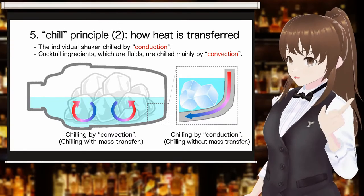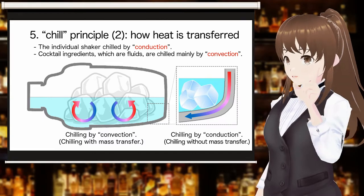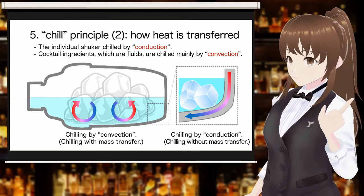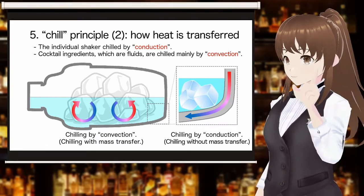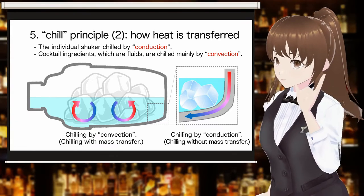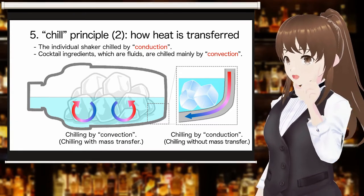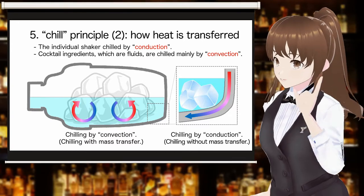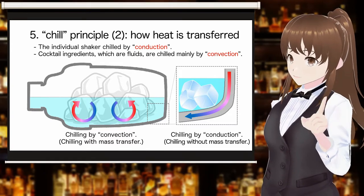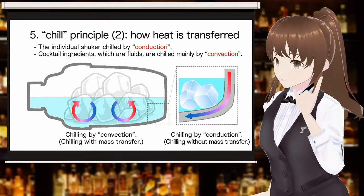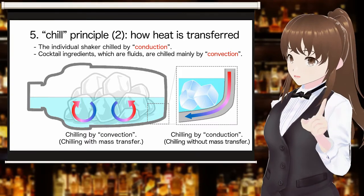Shakers made of metal or glass, which are solid, are chilled by conduction, which does not involve the movement of matter. Cocktail ingredients, which are liquids, are chilled by convection, which involves the movement of matter. Being aware of this difference in heat transfer is very useful in achieving one of the objectives of the shake: to chill.